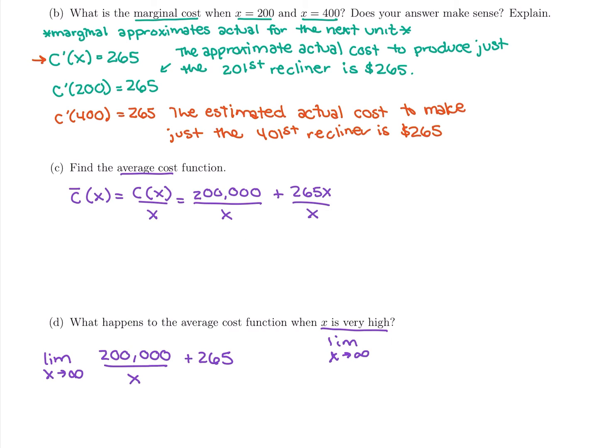So thinking about this limit at infinity, we want to remember top heavy, bottom heavy, or equal. Well this piece, 200,000 divided by x, is bottom heavy. x is going to infinity, we're dividing 200,000 by something infinite, we have way too little. This is just going to go to zero, it's bottom heavy.